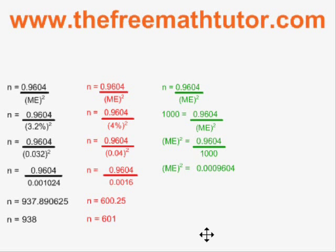This will give us this value. Because the ME is squared, we have to square root both sides. The square root of that value is 0.03099 and continues. Therefore, our margin of error is 0.03 in decimal mode, but we want it in the form of a percentage. We multiply by 100, and we get 3.099, etc. percent.